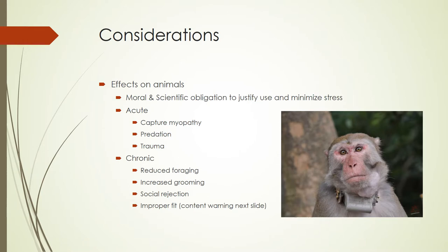Before you start using telemetry, you need to make a lot of decisions. The number one consideration is the effect that your tag or study design will have on the animals you're studying. We have moral and scientific obligations to justify the use of this technology and minimize stress on animals. If your radio collar is causing undue stress, you're going to get junk data — beyond harming the animal, your science won't be good either.